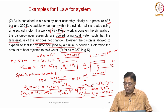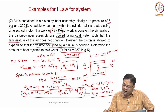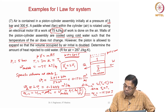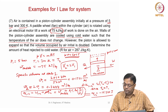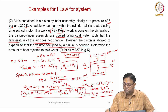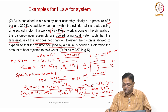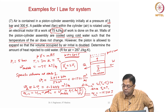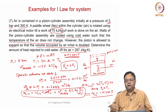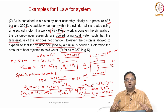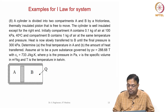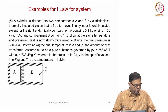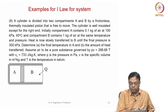The paddle work is negative, but the expansion work is positive because volume doubles — there is a positive delta v. The total work is a combination of the work coming in due to rotation of the paddle and the expansion work done by the air. One is done on the air, one is done by the air. That is problem number 7.